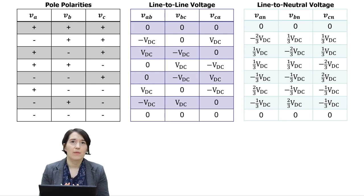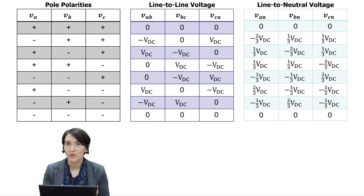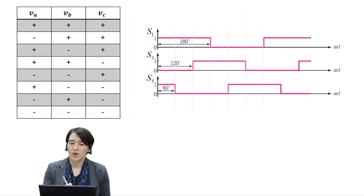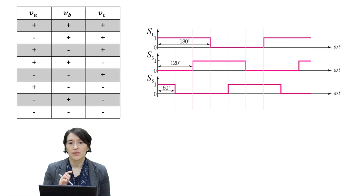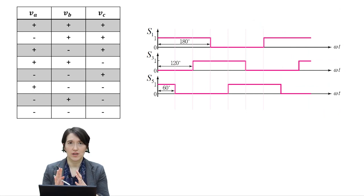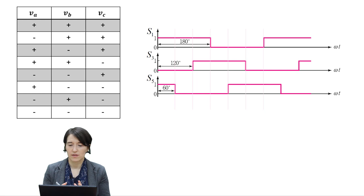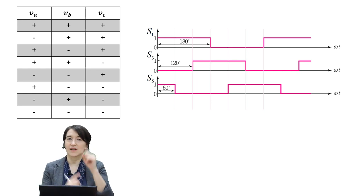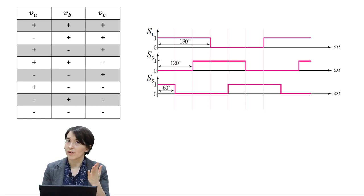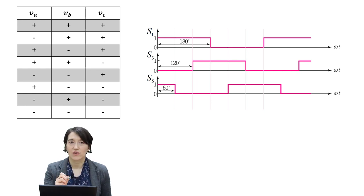From this table, we're going to look at how you put these into a certain sequence to get the output that you want. We are going to do this switching sequence. There are six switches in total, but because each pair is complementary, you only have to define one of them — so we're defining the top switches: S1, S3, and S5.